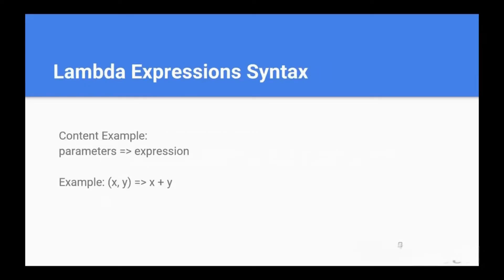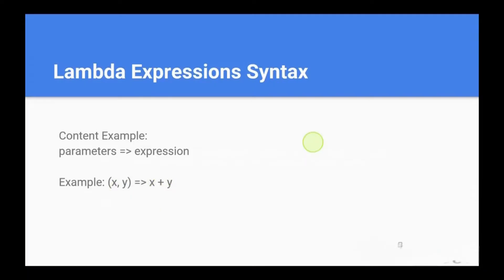Here is the basic syntax of a lambda expression. It consists of parameters on the left side, followed by the lambda operator, and then the expression or block of code on the right side. For example, x, y => x + y is a lambda expression that takes two parameters, x and y, and returns their sum. Lambda expressions are commonly used in LINQ queries to filter, sort, and transform collections. The biggest advantage of lambda expressions is their conciseness.